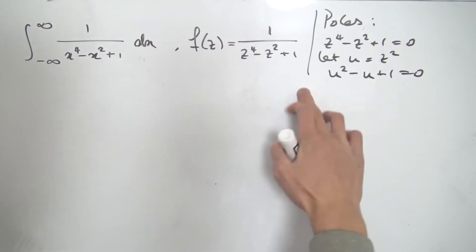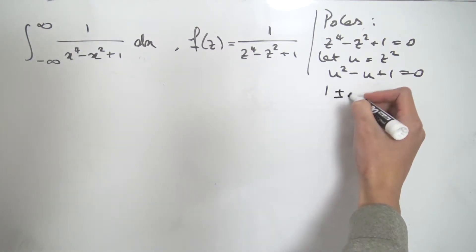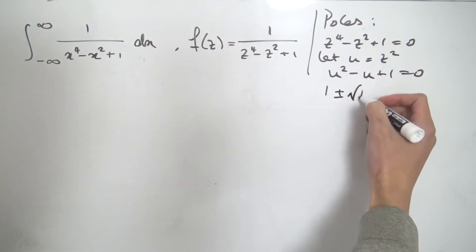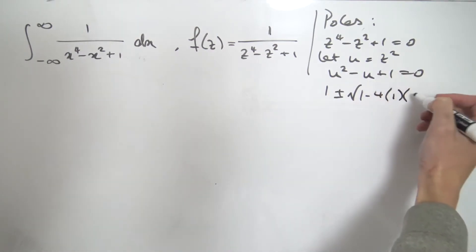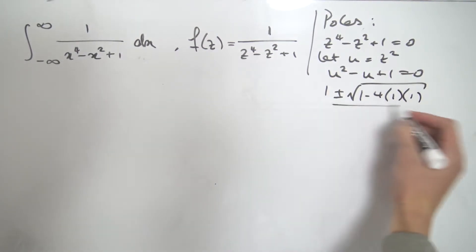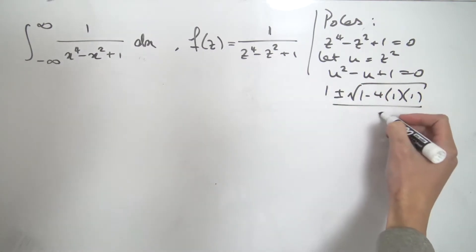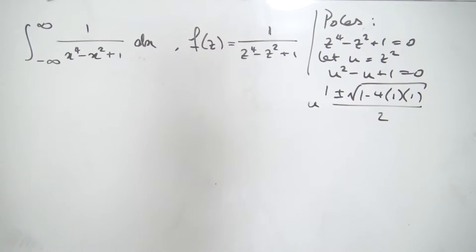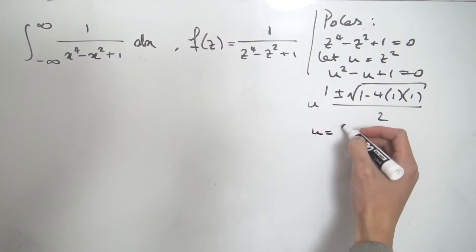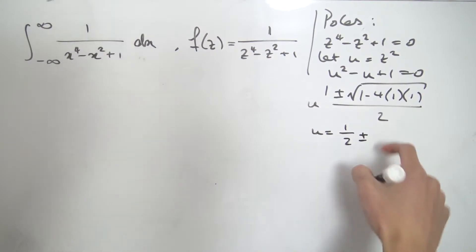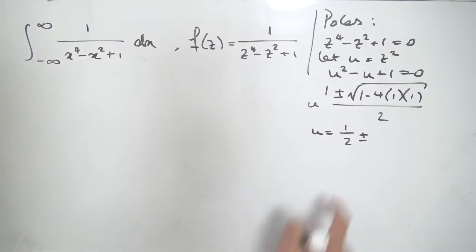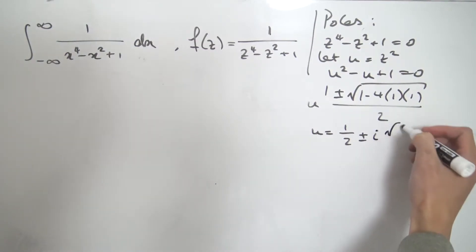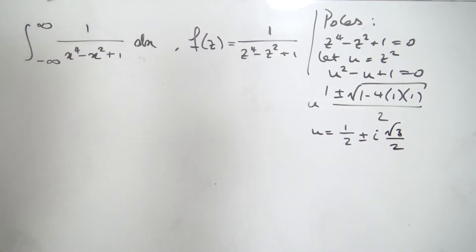From here we use the quadratic formula. We get: minus b — b is negative one, so minus negative one is one — plus or minus the square root of b squared, which is one, minus four ac, so four times one times one, all divided by two a, which is just two. Cleaning things up: one half plus or minus the square root of one minus four, which is negative three. Since we have a negative inside the square root, we bring out the negative as an i, giving us one half plus or minus i times the square root of three over two.